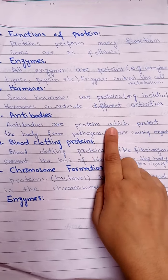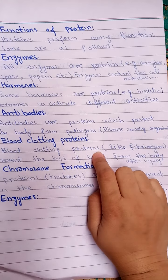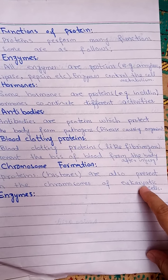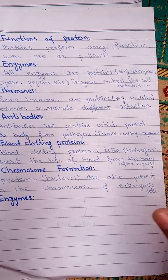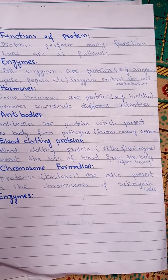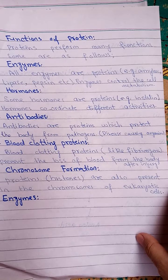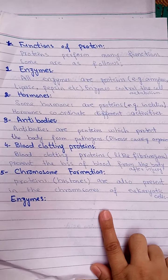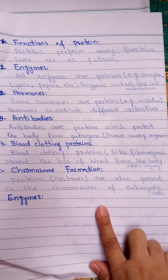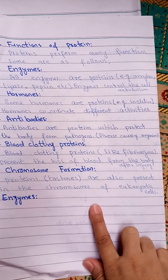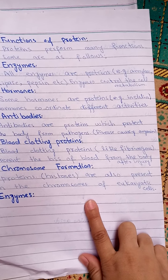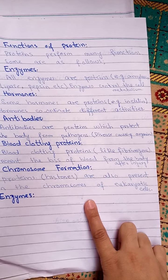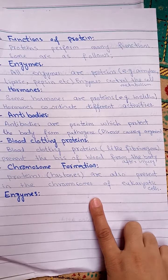Hormones coordinate activities such as regulating blood sugar. If our body has normal hormone function, we will perform different activities properly; otherwise, we cannot. Antibodies are proteins which protect the body — for example, white blood cells act as antibodies. They fight different diseases; if we have a fever, the antibodies work to eliminate it.